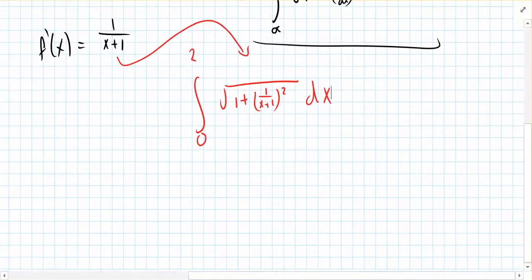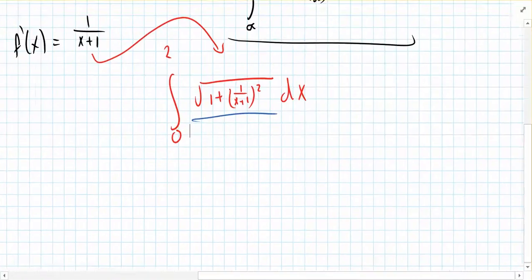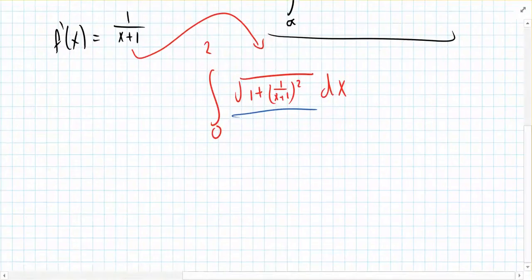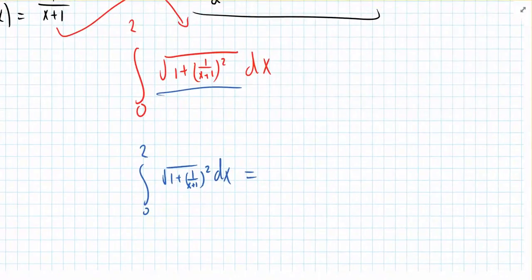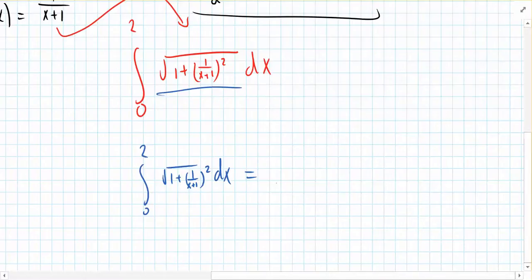And we can just use our calculator to figure this out, because I do not know the integral of this whole thing. It's very complicated, and we're allowed to use our calculator anyway. So if we just plug this in, we find that the integral of the square root of 1 plus 1 over x plus 1 squared dx from 0 to 2 is actually equal to about 2.302.